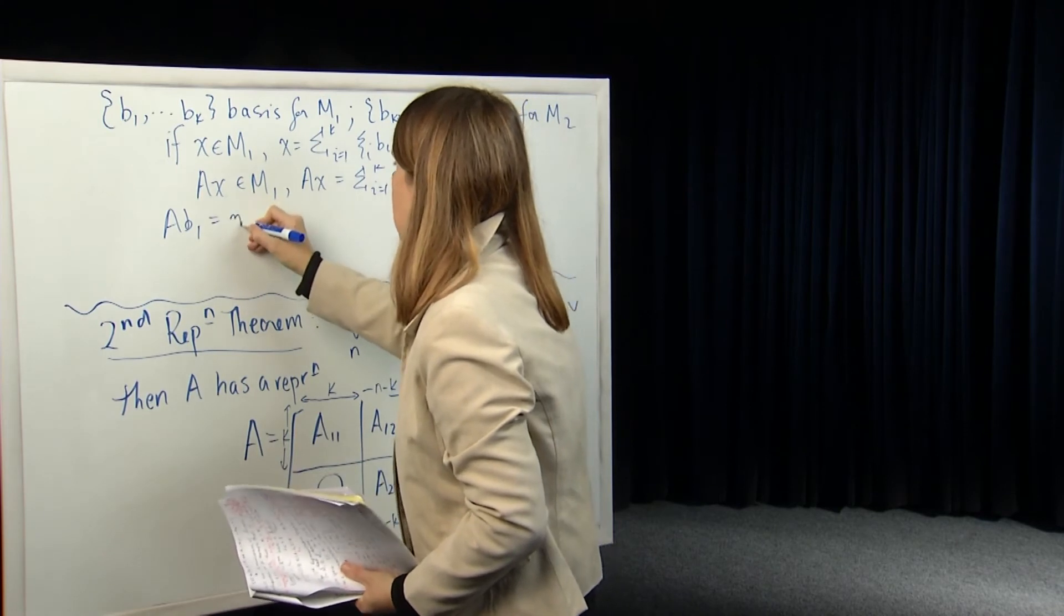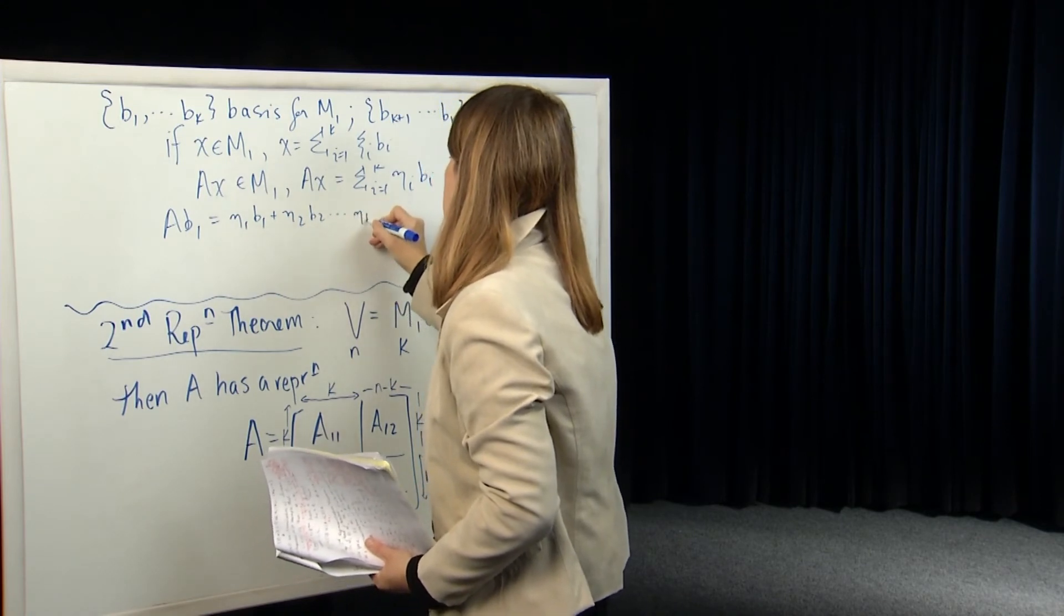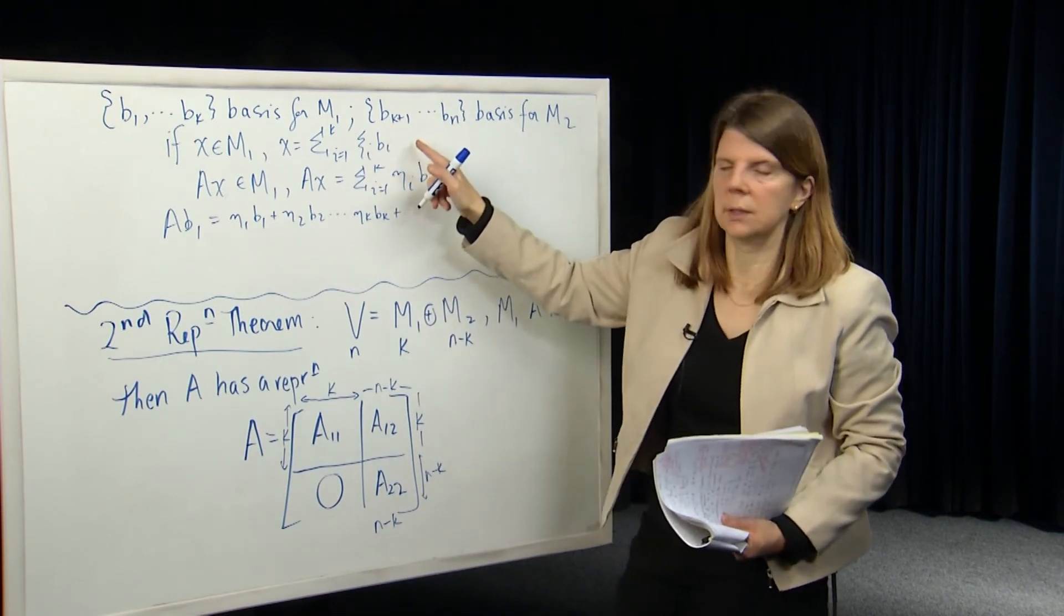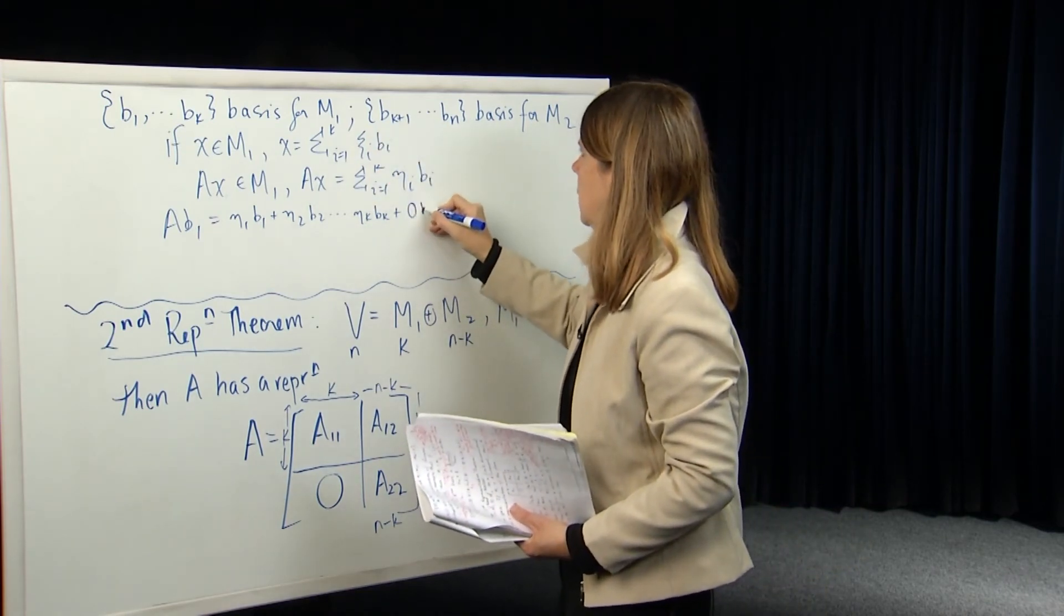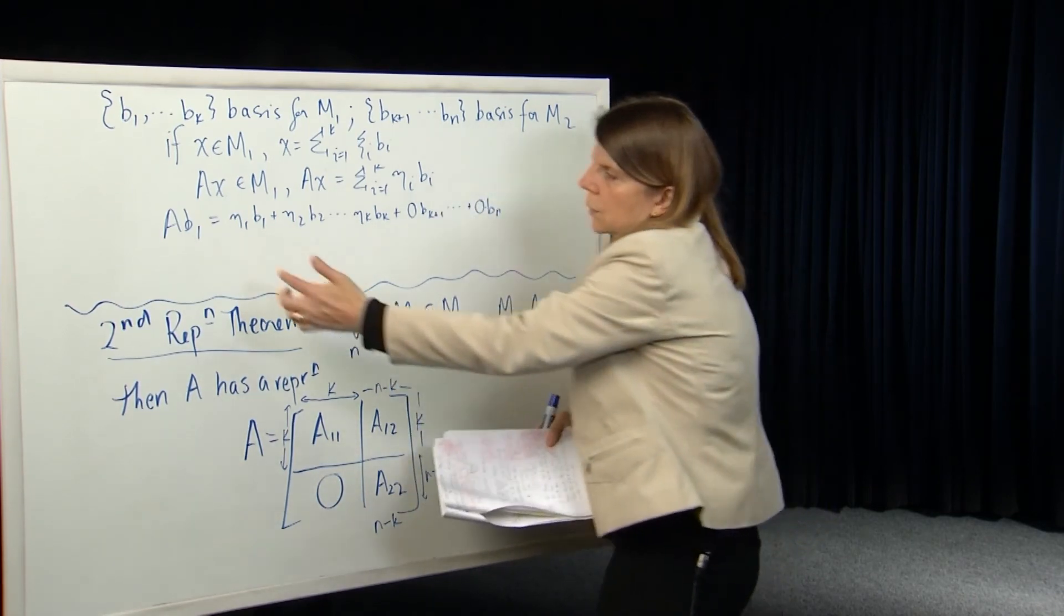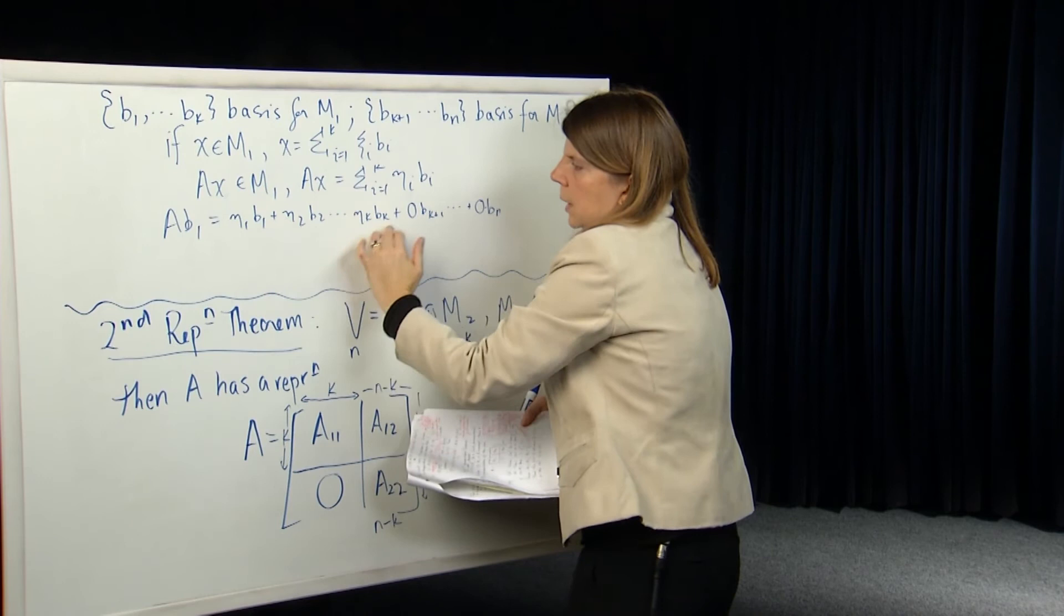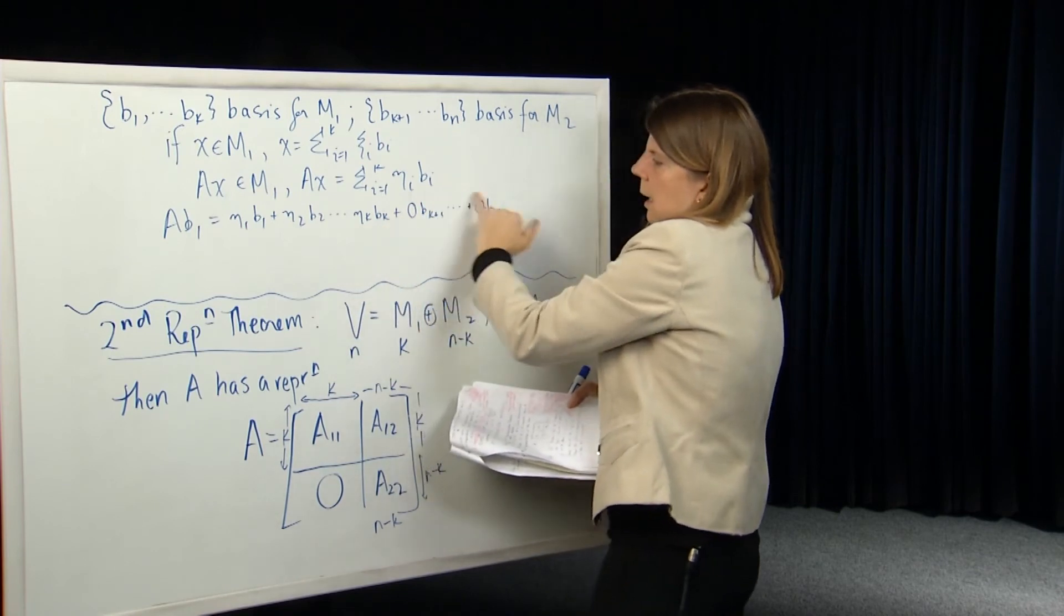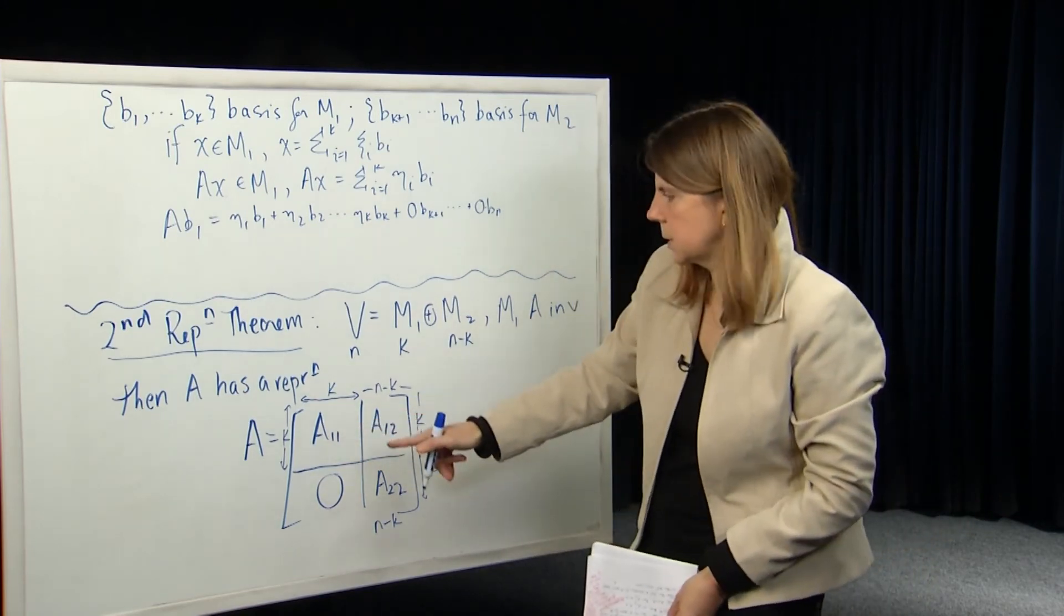So if we think about AB1, that's going to be A11 B1 plus A12 B2 up to A1K BK. And then the coefficients of all of the basis vectors that are in V but not in M1, so they're in M2, the coefficients of those are just going to be 0. 0 BK plus 1 plus 0 BN. And that holds for all of the basis vectors in M1. So AB2 will have non-zero coefficients or possibly non-zero coefficients for the first K terms, and then the remaining terms will all be 0 because that vector is also in M1.